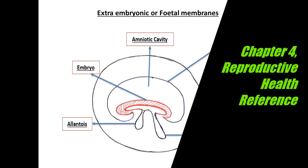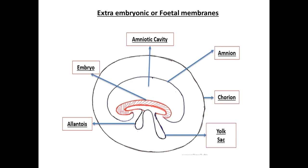Amniocentesis is a method to determine the sex of a fetus in reproductive health. You can draw this diagram for that topic as well, as it is repeating in amniocentesis. The extra-embryonic fetal membranes are four in number: the outermost is the chorion, then amnion, then yolk sac, and the fourth is the allantois.